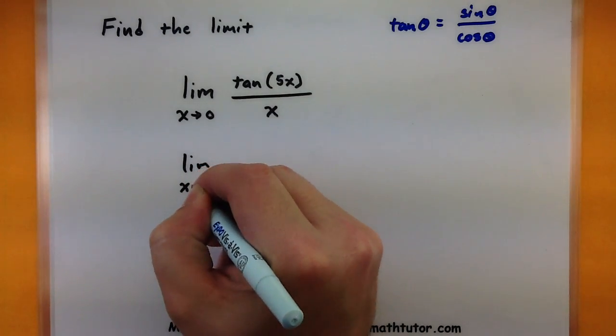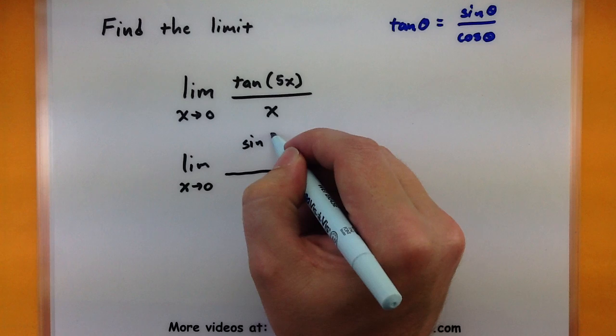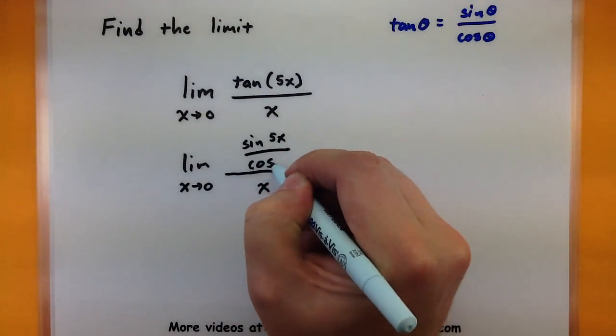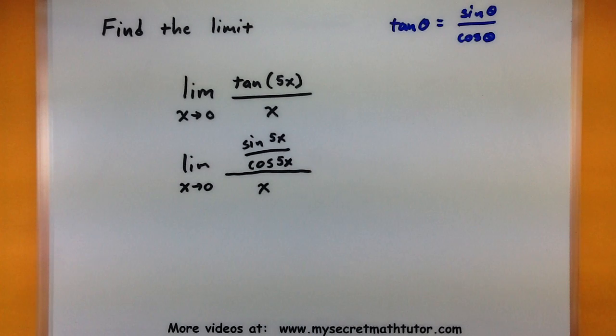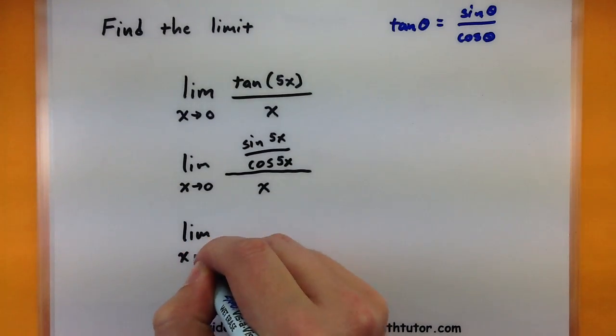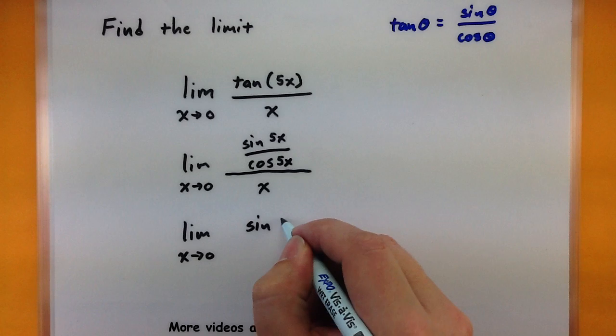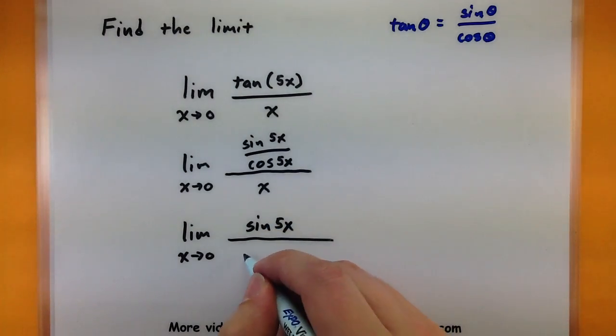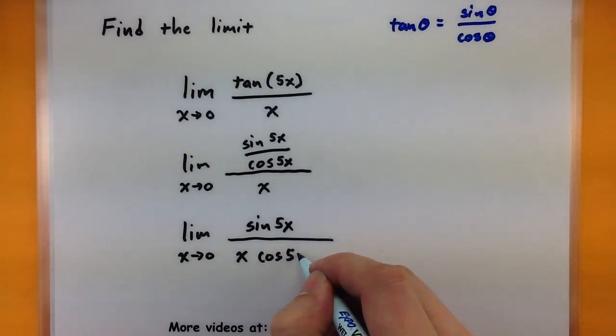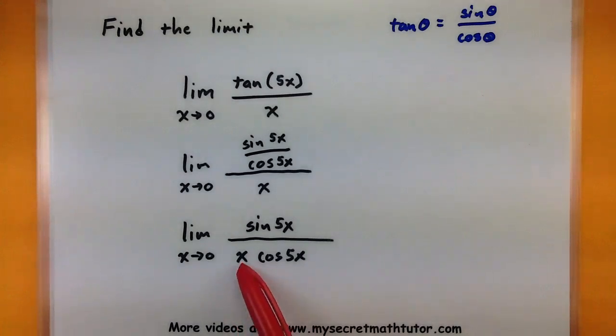So let's go ahead and rewrite this limit using that. So the limit as x approaches 0. On the top of this fraction, I'll write this as sine of 5x all over cosine of 5x. So you can actually see that there's where the sine is coming into place. Let's go ahead and do a little bit more of the rewriting process. Everything is being divided by the x, we can write this as sine of 5x all over x cosine of 5x. Now at this point I want to point something out.